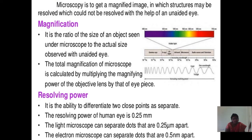Microscopy is the technique of getting a magnified image in which structures may be resolved that could not be resolved with the unaided eye. Magnification is the ratio of the size of the object seen under the microscope to the actual size observed with the unaided eye. The total magnification is calculated by multiplying the magnifying power of the objective lens by that of the eyepiece. Resolving power is the ability to differentiate two close points as separate. The resolving power of the human eye is 0.25 mm. The light microscope can separate dots that are 0.2 micrometers apart, and the electron microscope can separate dots that are 0.5 nanometers apart.